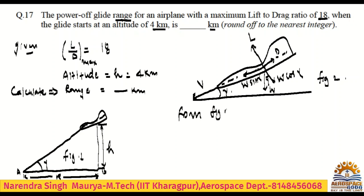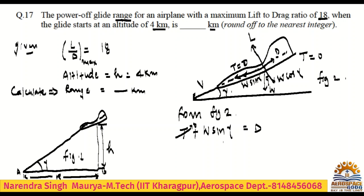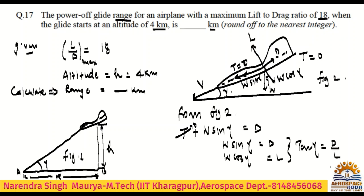From figure two, checking the components: W sin gamma equals D, because thrust is zero since this is a power-off condition — it is clearly mentioned, power-off, so thrust is zero. Therefore W sin gamma equals drag, and W cos gamma equals lift. From these two we can write tan gamma equals sine gamma over cos gamma, which is D over L. This is equation number one.